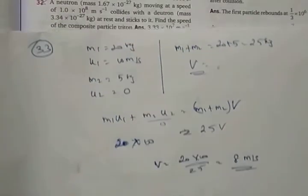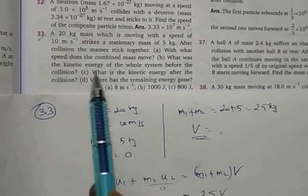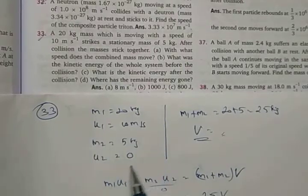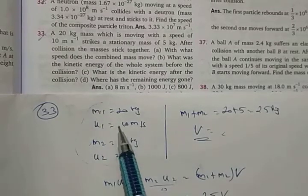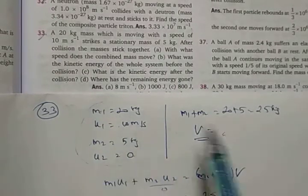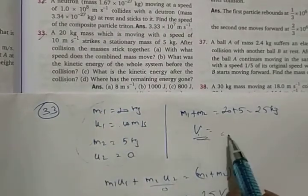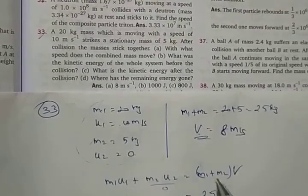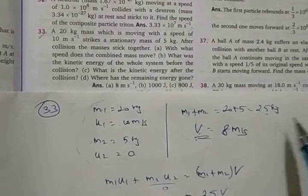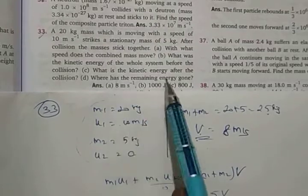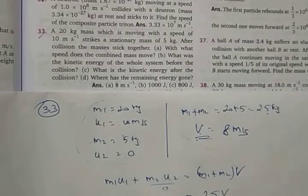Based on that, find the kinetic energy of the whole system before collision — only the 20 kg mass is moving so it is ½·20·10². For part C, kinetic energy after collision is ½·25·8². Then subtract to find the kinetic energy lost. I am leaving the final calculation to you.